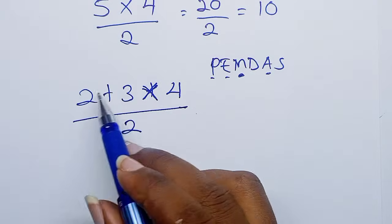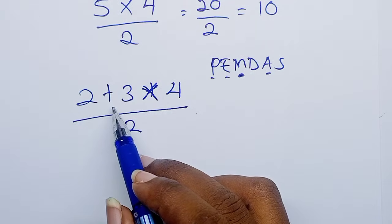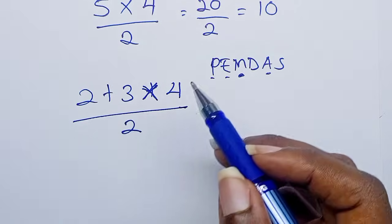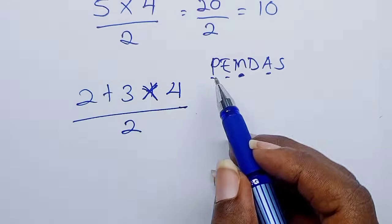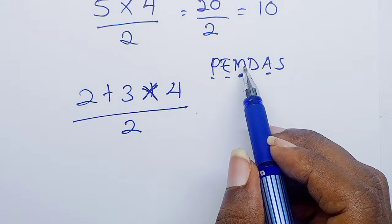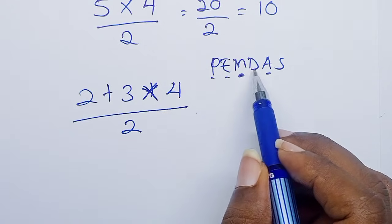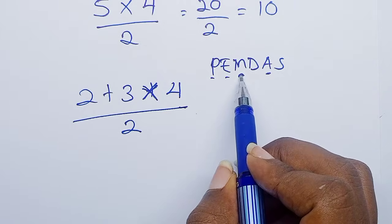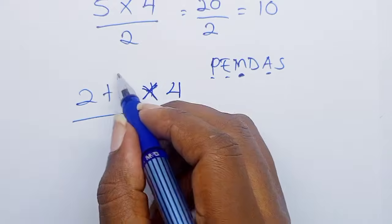According to the order of operations, you look at which comes first - it's multiplication. So that means we have to work out this multiplication first. So we shall have two plus, then three times four. Okay, so three times four is 12.